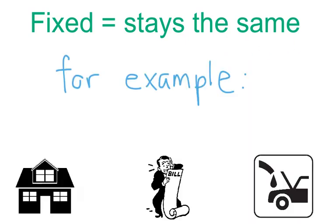A fixed expense is an expense that stays the same every month. For example, a home payment or a mortgage, paying rent on a house, getting a bill like a medical bill, paying a car payment. These are all fixed expenses because they stay the same every month. They never change.